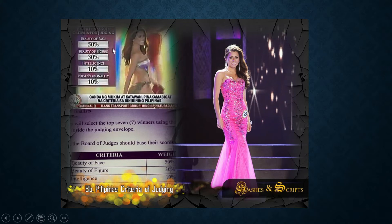And not only that, the announcer will also announce the weights of this criterion. For beauty of the face, it's 50%. For beauty of the figure, it's 30%. Intelligence, 10%. And poise and personality is 10%. What the announcer did was to describe to you the criteria for judging and the weights of each of those criterion.